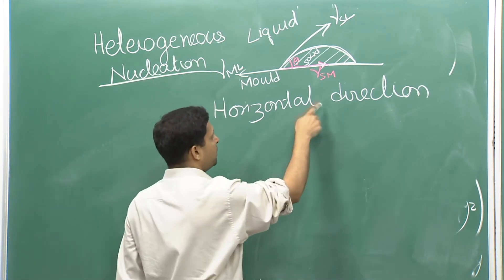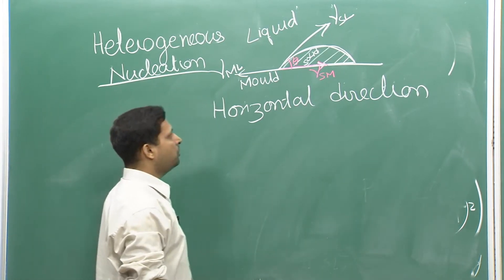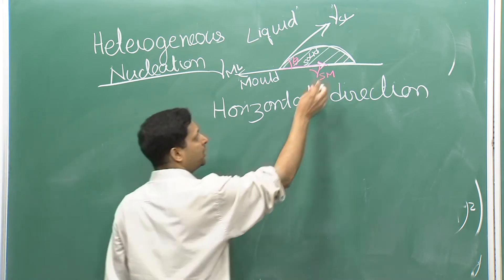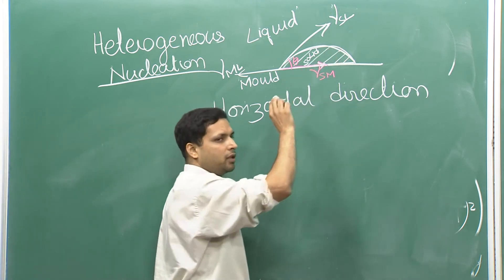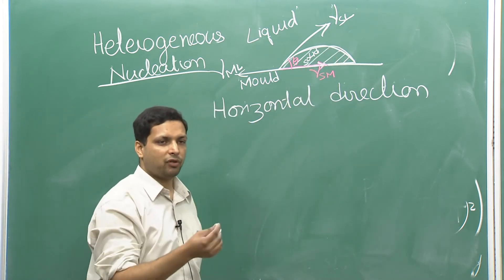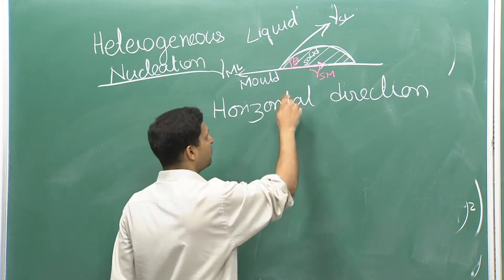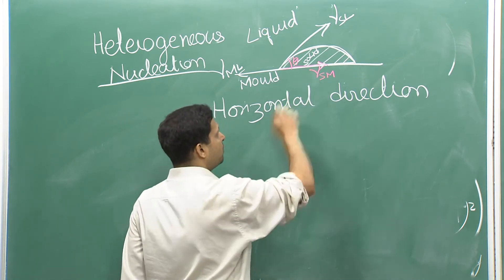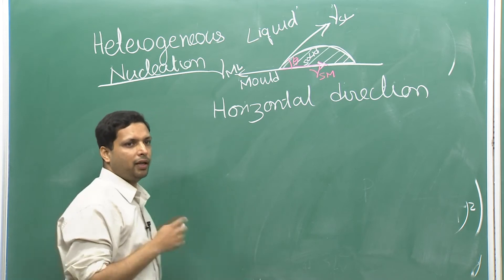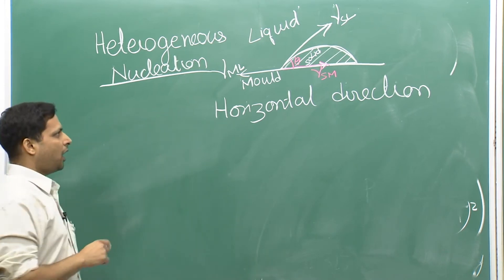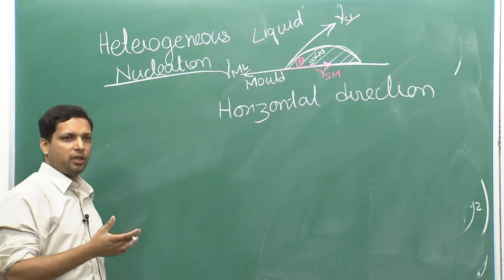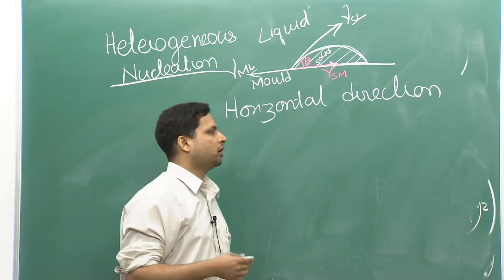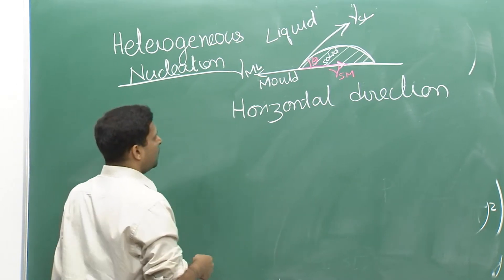In heterogeneous nucleation, the solid forms at one of the preferred sites — not randomly inside the liquid, but at the mold. The solid has formed at the mold-liquid interface, and in that sense it is not homogeneous; it is not forming in a random way.